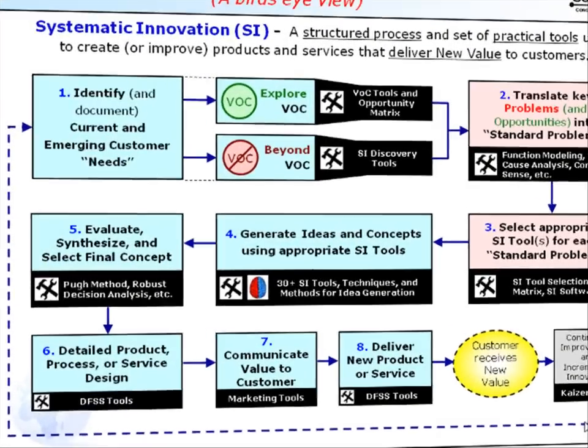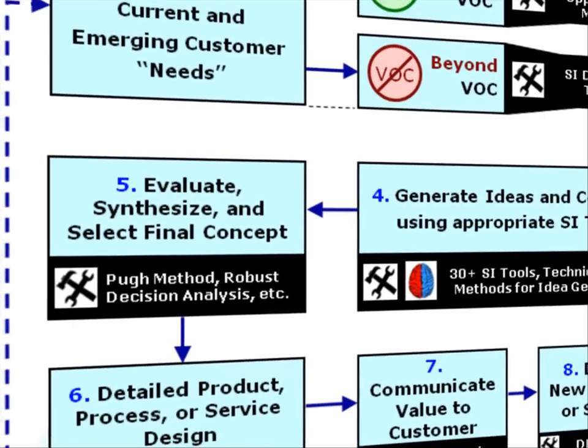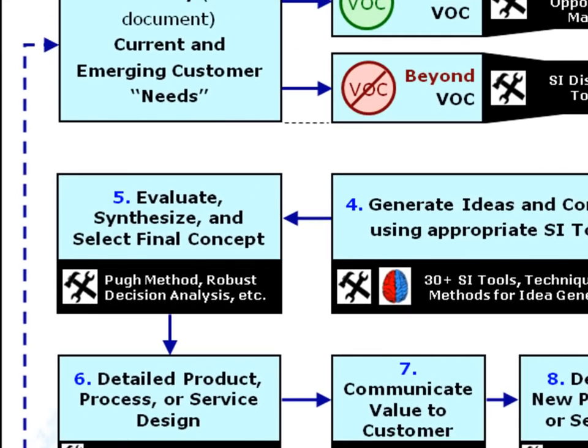This brings us to Step 5: evaluate, synthesize, and select the final concept. Once we have many ideas generated from the previous step, numerous techniques are available to do an objective evaluation of all these ideas to ultimately select or synthesize the best concept for the rest of the innovation process.